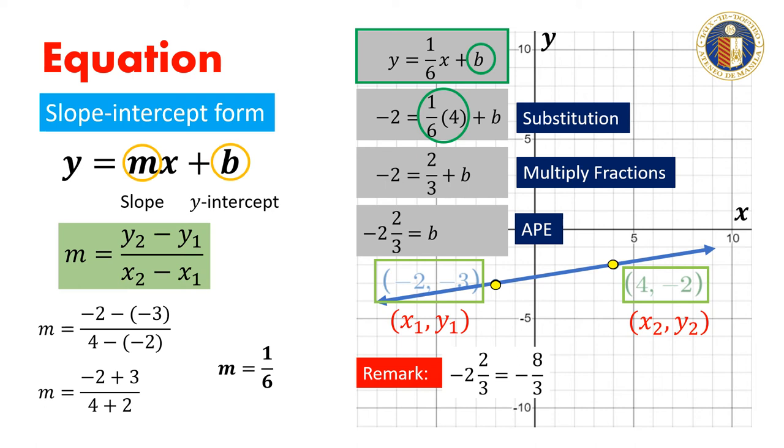Now we have enough information to write the equation of the line in slope-intercept form. The equation of the line in slope-intercept form is y equals (1/6)x minus 8/3.